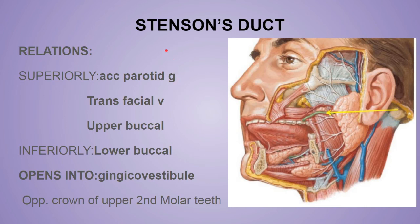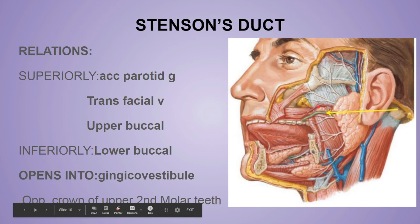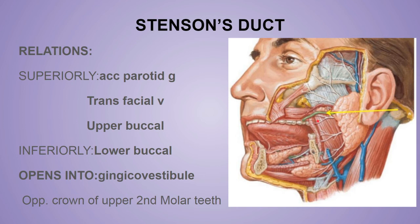The Stenson's duct (parotid duct) is thick-walled and about 5 cm long. It emerges from the middle of the anterior border of the gland and runs forward and slightly downward on the masseter muscle. Superiorly it is related to the accessory parotid gland, the transverse facial artery, and the upper buccal branch of the facial nerve. Inferiorly it is related to the lower buccal branch of the facial nerve. At the anterior border of the masseter muscle, the duct turns medially and pierces three structures: the buccal pad of fat, the buccopharyngeal fascia, and the buccinator muscle.